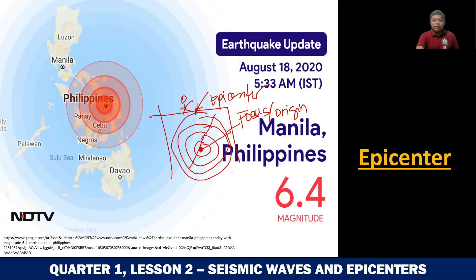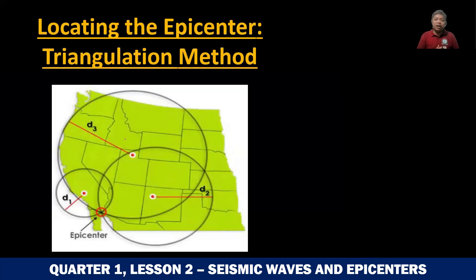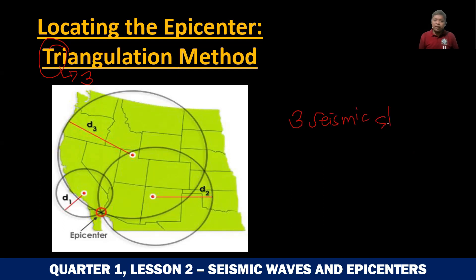So how do seismologists locate the epicenter? They are the scientists that study earthquakes. How do they locate the epicenter of an earthquake? They use a process called the triangulation method. In the triangulation method — from the name itself, 'tri' pertains to the number three — you need three seismic stations to locate the epicenter of an earthquake.